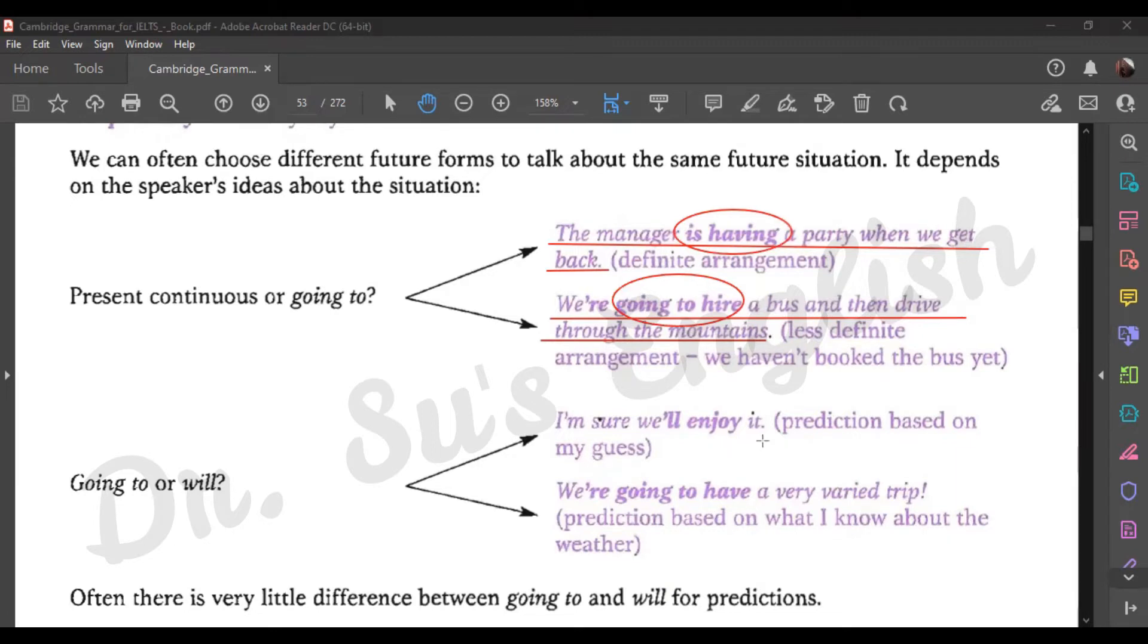If you say 'I'm sure we'll enjoy it,' it's even less likely. This is a prediction based on your guess. Maybe you won't enjoy it, who knows? It's a prediction.